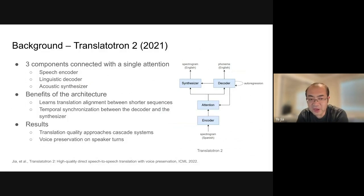So in the following work last year, we proposed Translatotron 2, which brings the translation quality from a direct speech-to-speech translation model to be very close to cascade systems. Translatotron 2 is composed of three key components: a speech encoder, a linguistic decoder, and an acoustic synthesizer. These three components are connected with a single attention model.